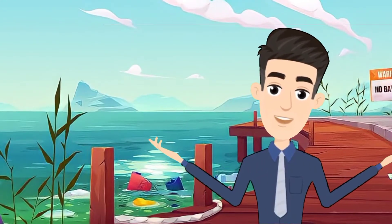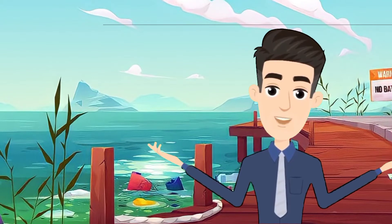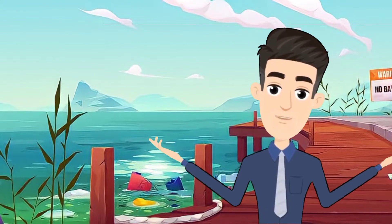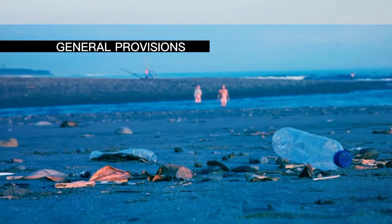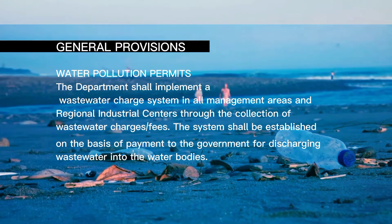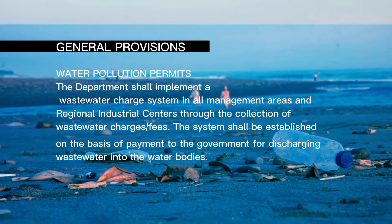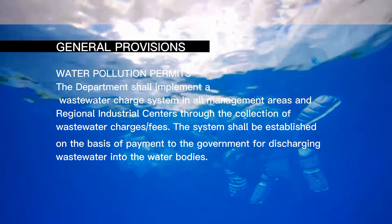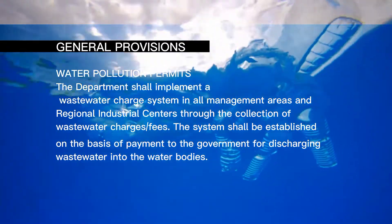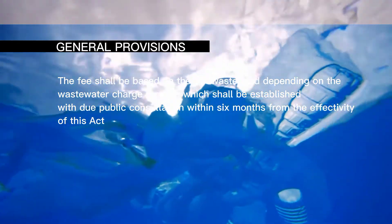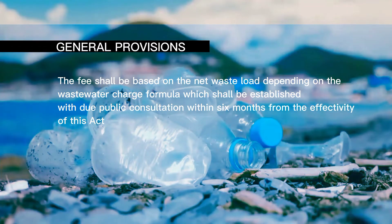That is why the government implemented RA 9275 to control and prevent further damage to our water bodies. Now, let us see what are the general provisions under this law. Water pollution permits: the department shall implement a wastewater charge system in all management areas and regional industrial centers through the collection of wastewater charges or fees. The system shall be established on the basis of payment to the government for discharging wastewater into the water bodies. The fee shall be based on the net waste load, depending on the wastewater charge formula, which shall be established with due public consultation within six months from the effectivity of this act.